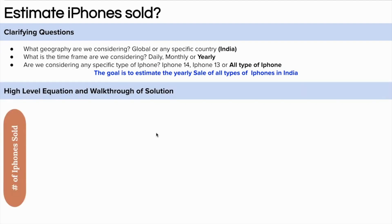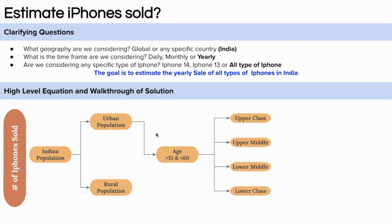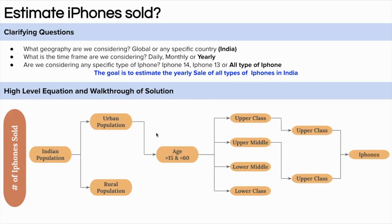We need to estimate the number of iPhones sold in India in one year. Let's start with the Indian population, then divide it into urban and rural population. We'll assume the rural population will not be buying an iPhone and focus on the urban population. We'll then further drill down the urban population, taking the fraction of urban people between age 15 and 60 — these are people who will have potential access to mobile phones. To get the iPhone sale, we need to further bifurcate them into upper class, upper middle class, lower middle class, and lower class. We'll assume that lower class and lower middle class will not be buying an iPhone, and a fraction of upper and upper middle class will be buying an iPhone, as there are other competitors like Samsung and OnePlus.